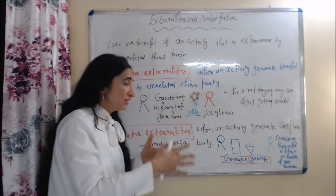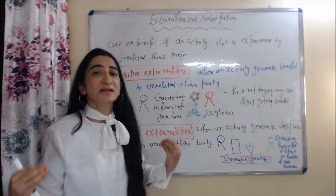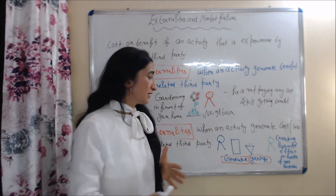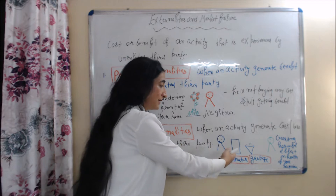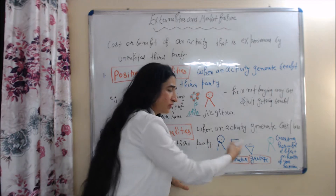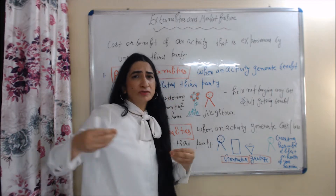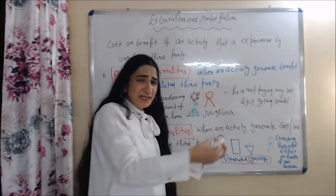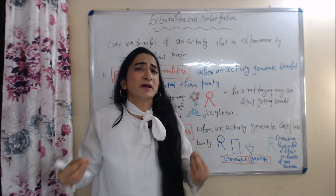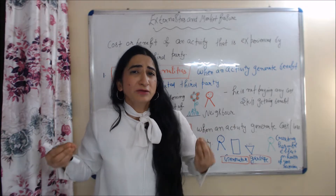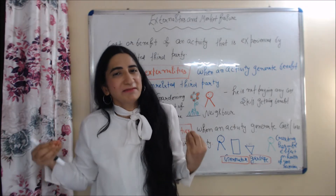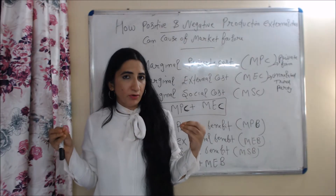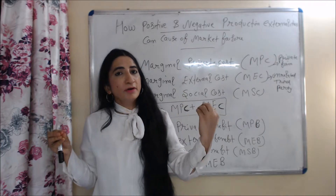Negative externalities means when an activity generates a cost or loss to an unrelated third party. For example, you keep a generator or garbage outside of your home and it is creating a harmful effect on the health of your neighbor. That's called negative externalities.